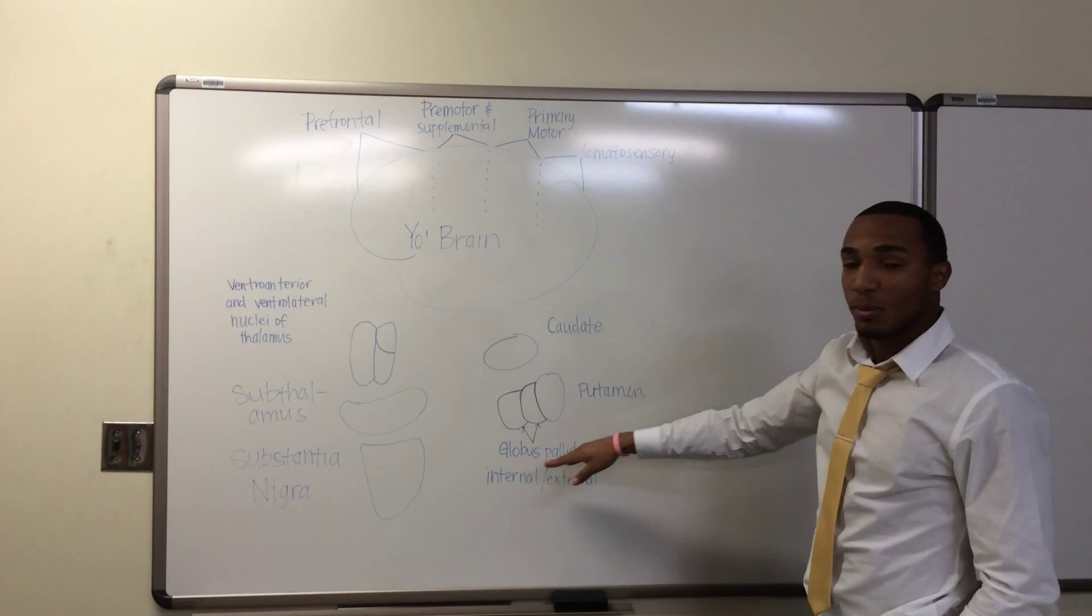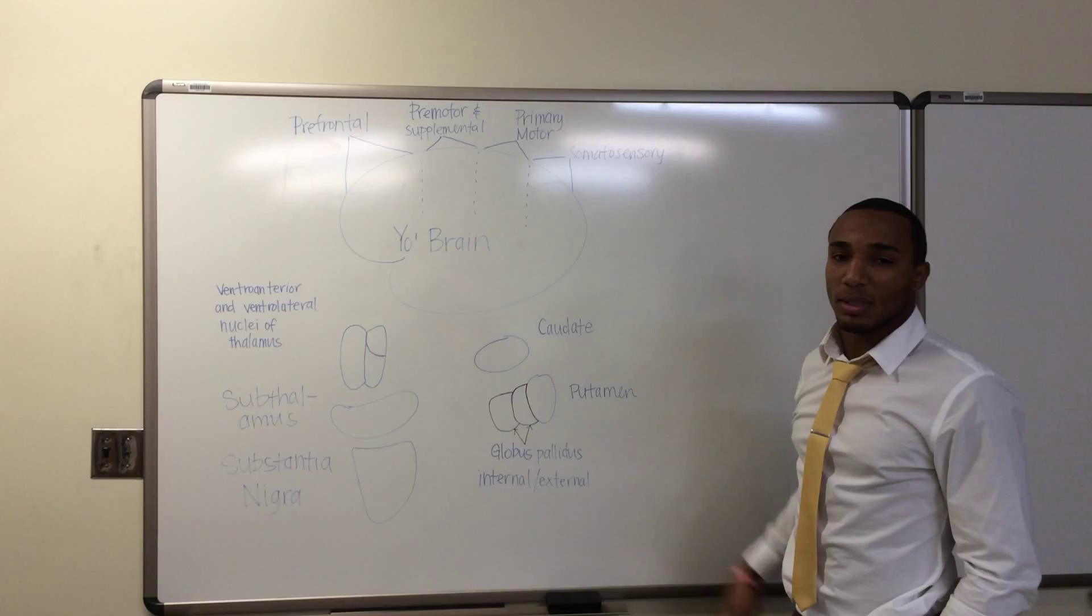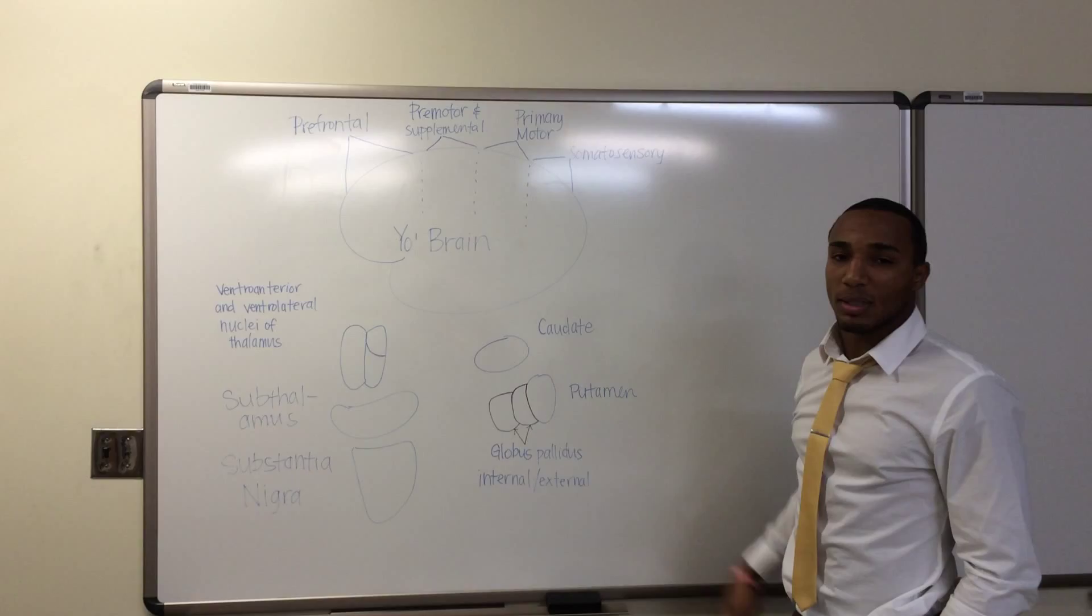This is the caudate, the putamen, the globus pallidus internal and external, substantia nigra, the subthalamus, and the ventral anterior and ventral lateral nuclei of thalamus. We'll get into more detail in a second.